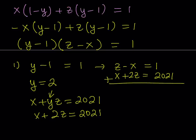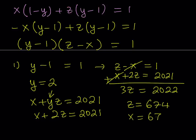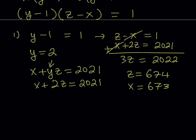I would like to add these two equations. x cancels out, and we get 3z = 2022. Divide both sides by 3 to get z = 674. Since z and x differ by 1 and x is smaller, x = 673. This gives us the ordered triple (673, 2, 674).